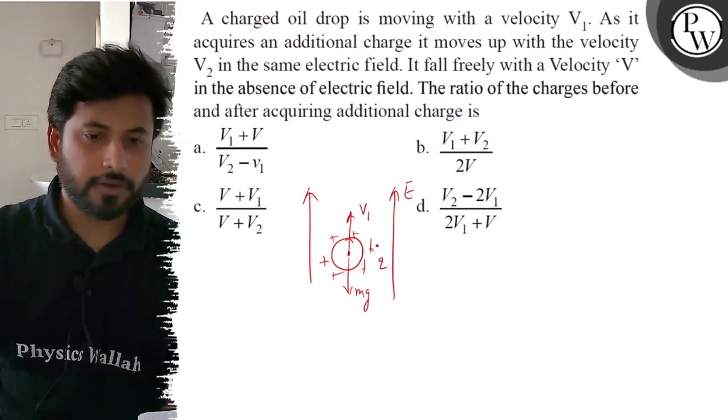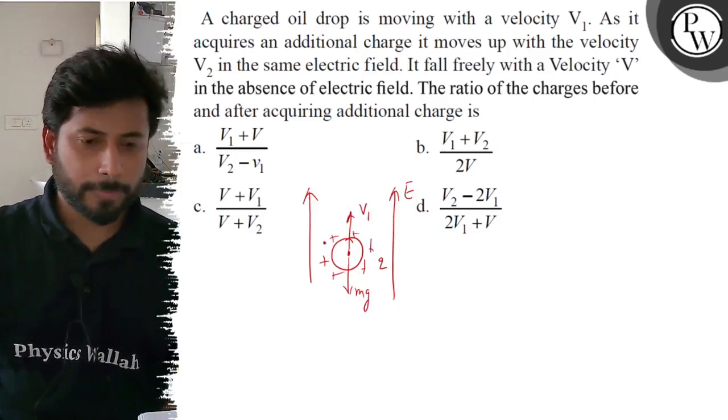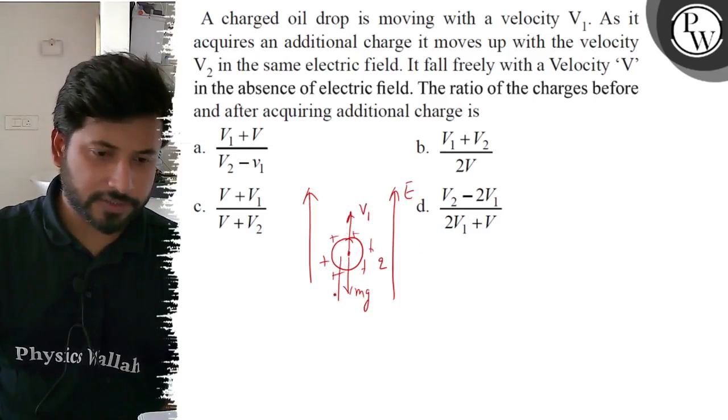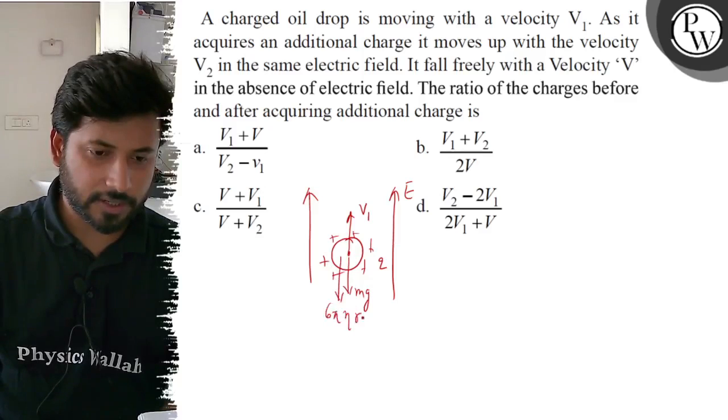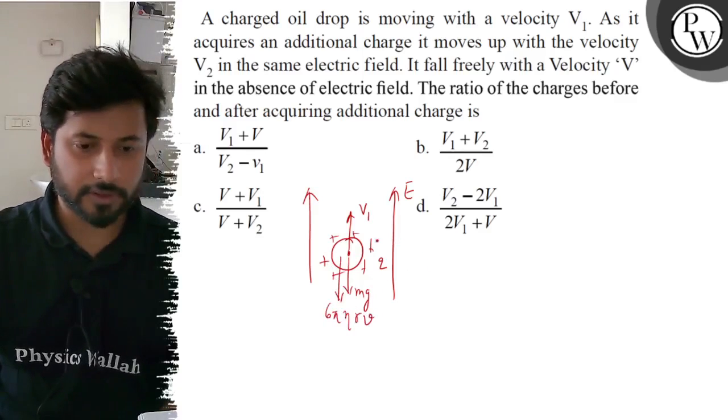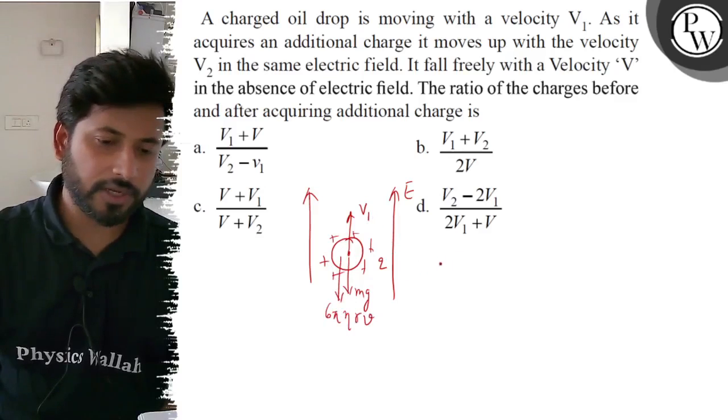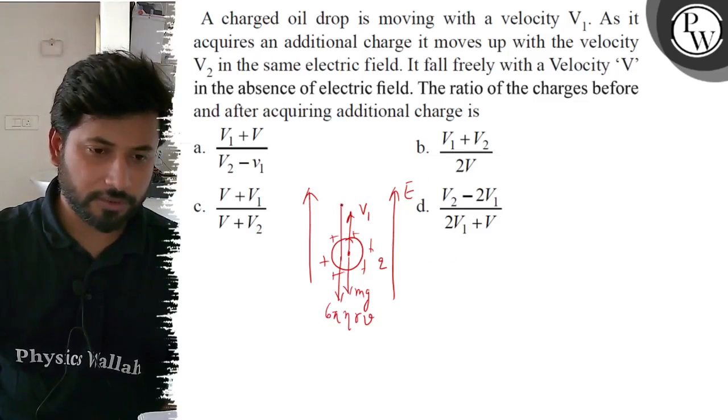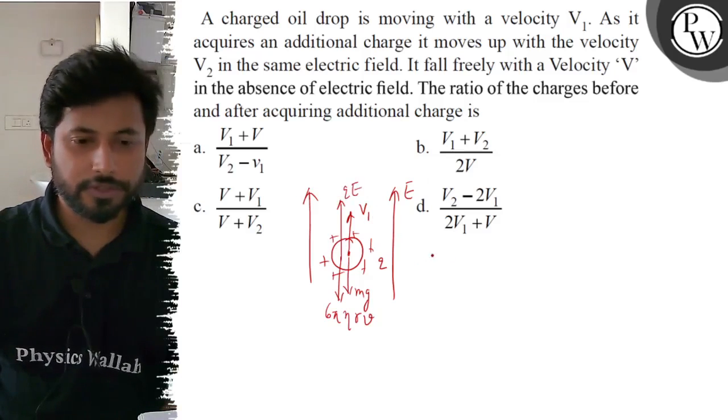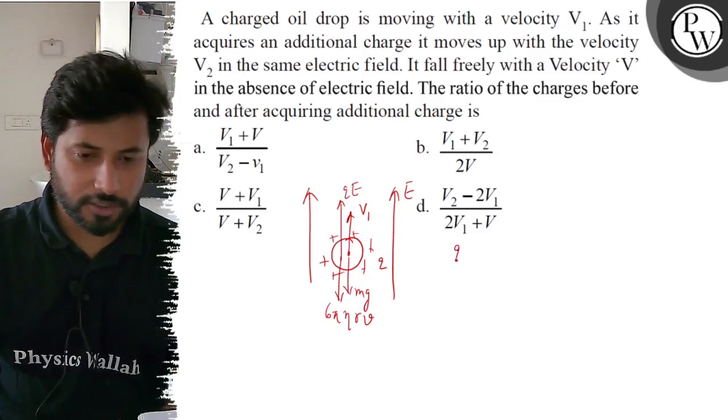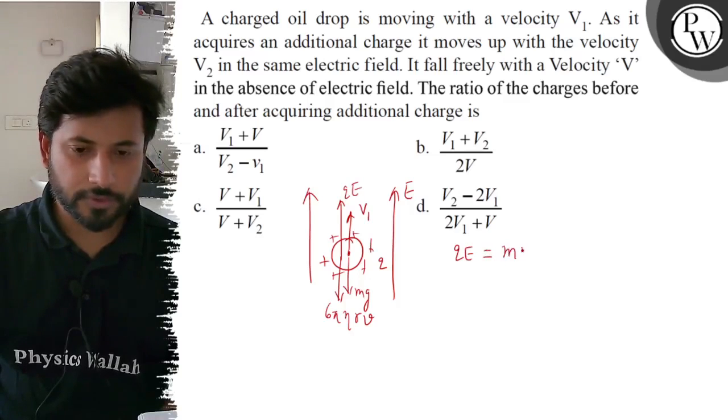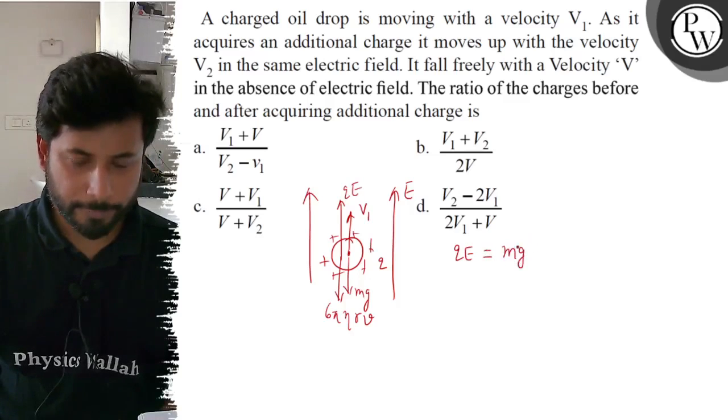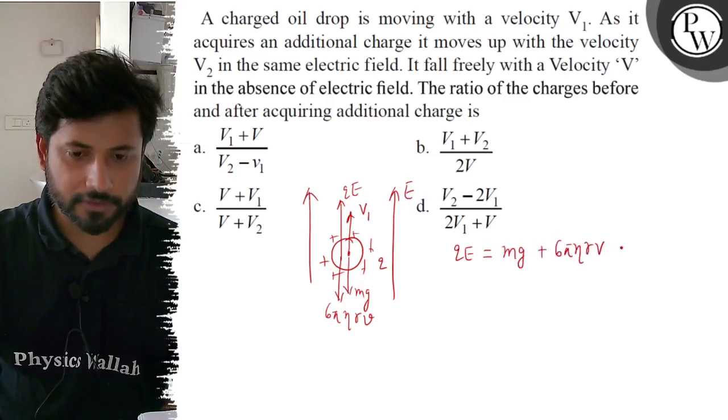This is a drag force. Drag force is equal to F equals 6πηRV. Now we write the equation of motion. The equation of motion is QE equals mg plus 6πηRV1. This is the first equation.